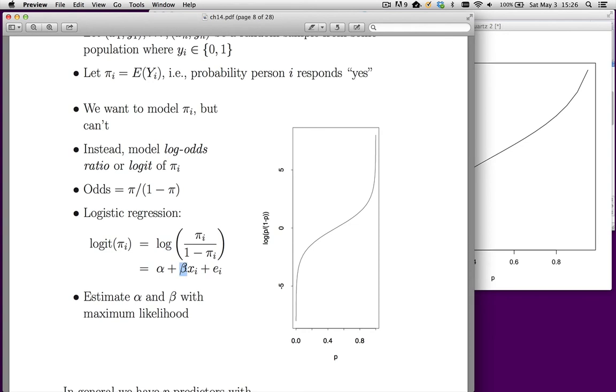Now what that means is, for example, if I have a positive β, positive β means for additional unit of x, the log odds go up by β. But we don't like to think in log odds. We like to think in probabilities.